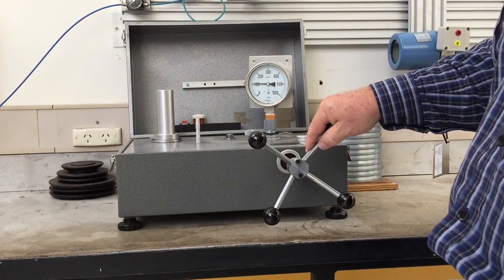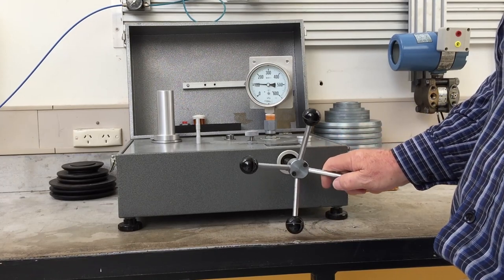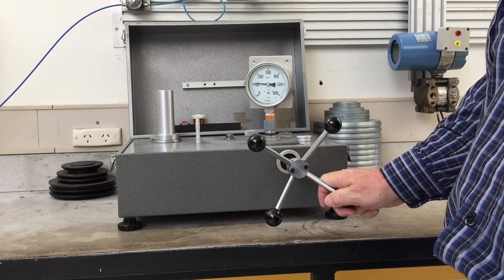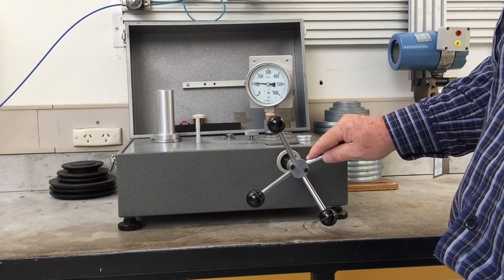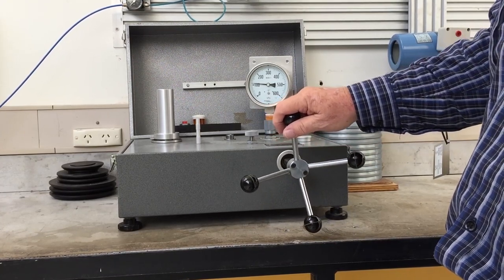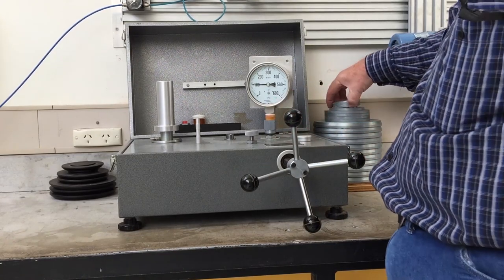Sometimes the piston adheres to its seat and the weight can be rotated to overcome any stiction. The first pressure is 100 kPa. Record the pressure indicated on the gauge.